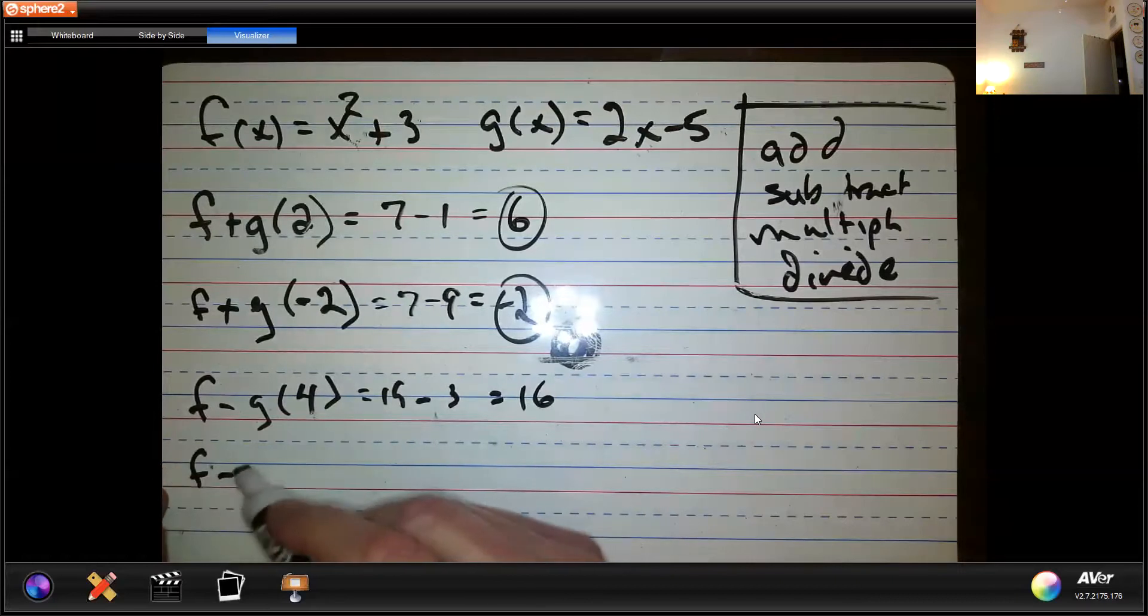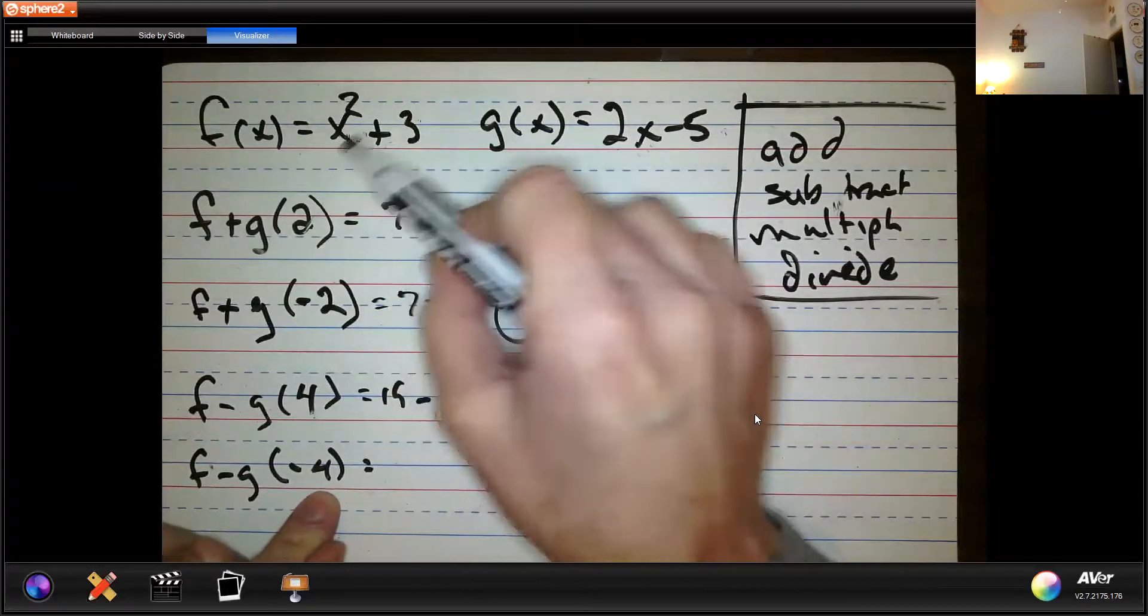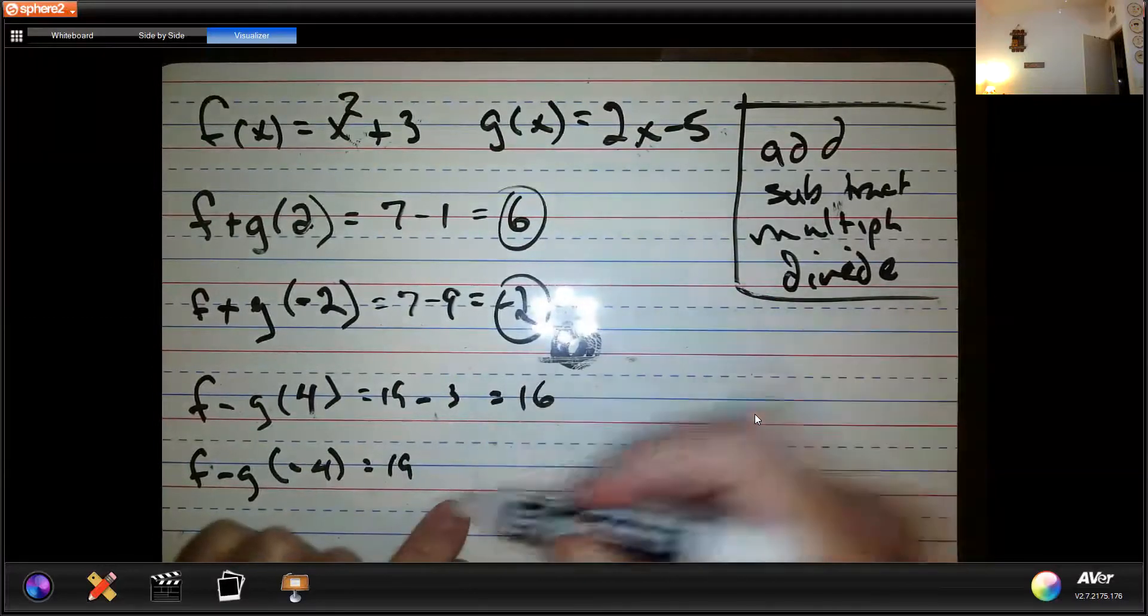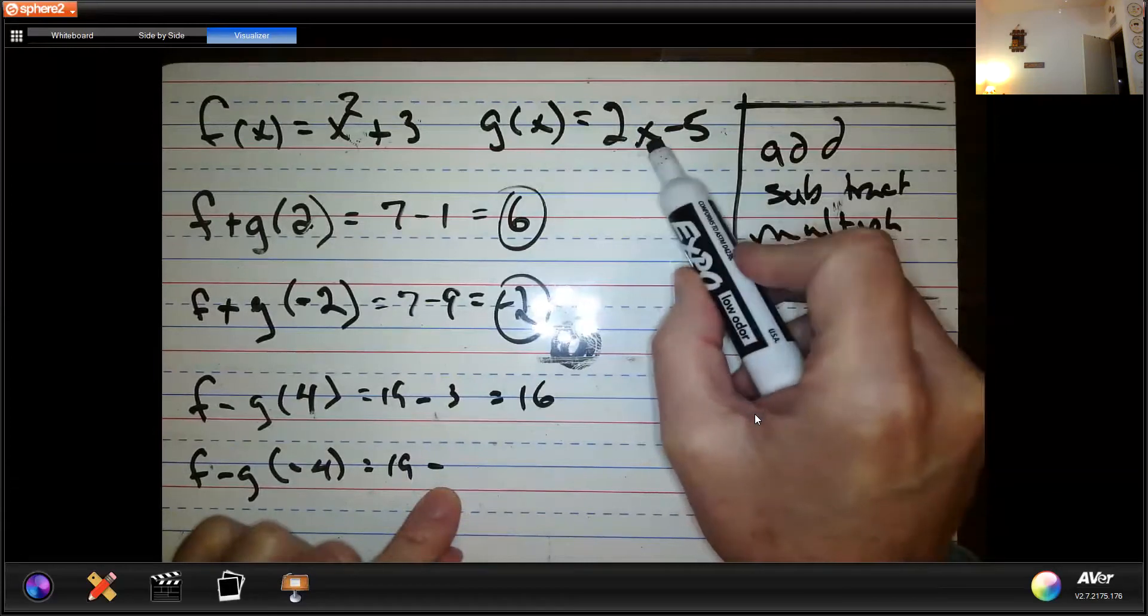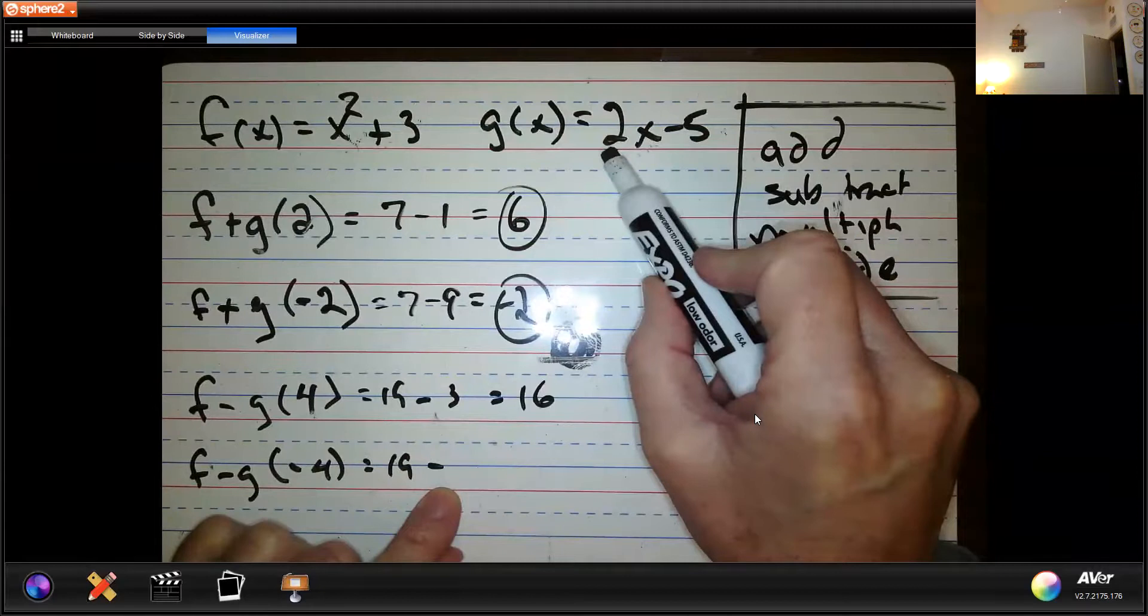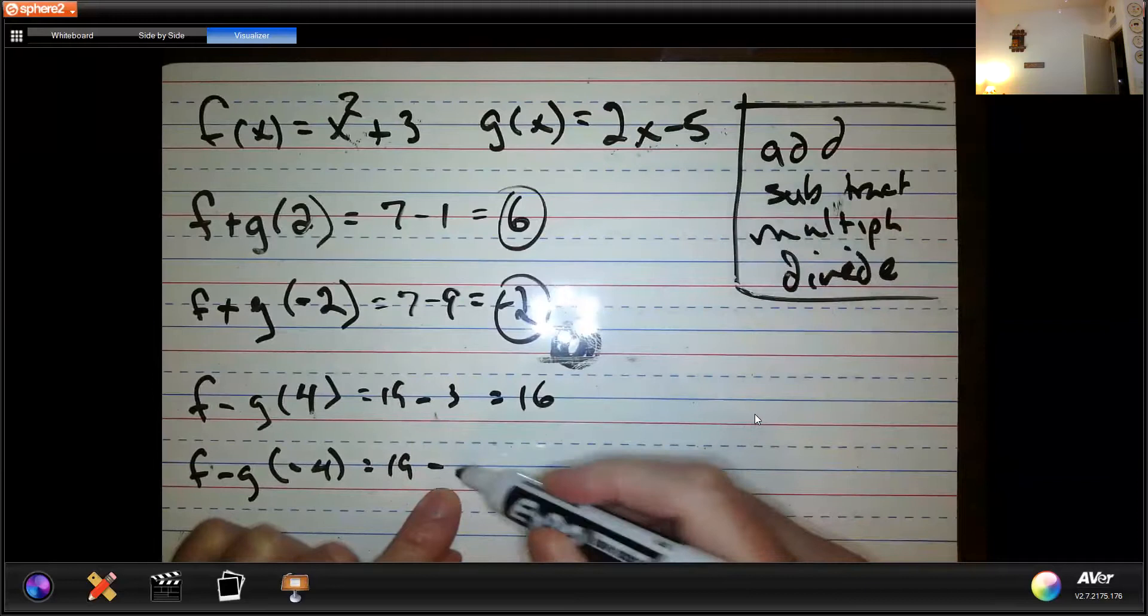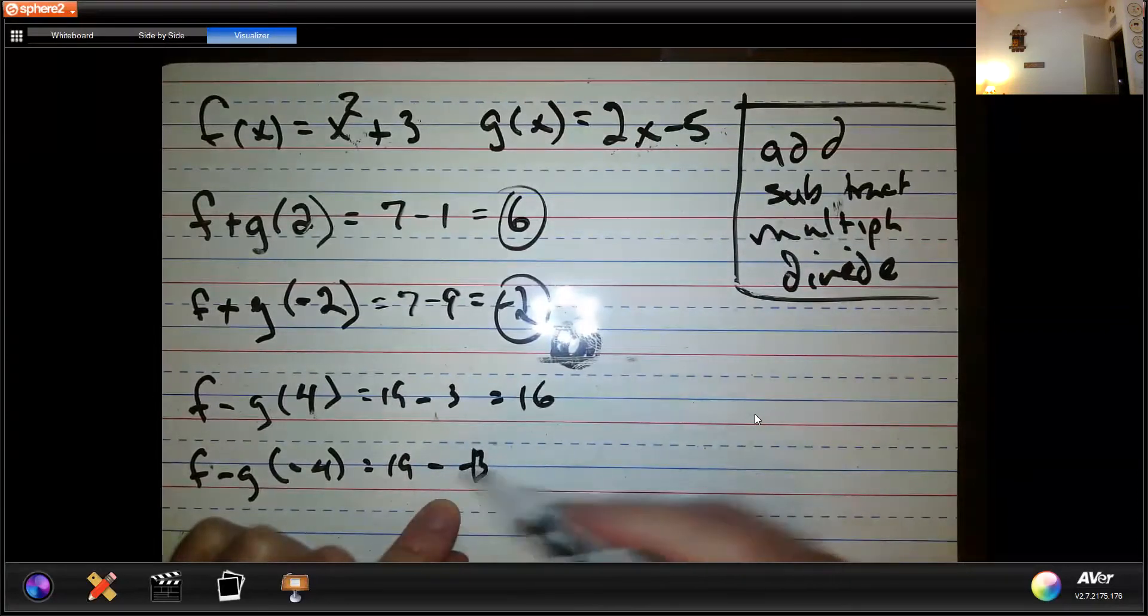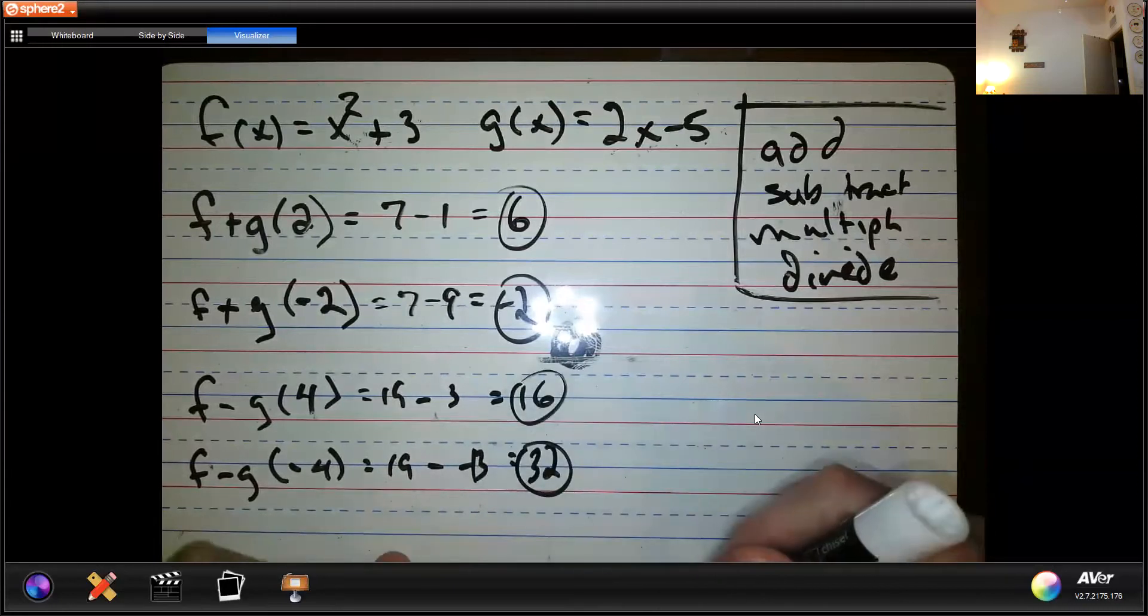Let's do it again, only this time with negative 4. Negative 4, well, that's still 19, right? Because that's 16 plus 3, that's 19. And then I'm subtracting. If I put negative 4 in here, I get negative 8 minus 5, that's negative 13. Minus minus makes plus, right? Minus minus makes plus. 19 plus 13, 32. Those are the answers, right?